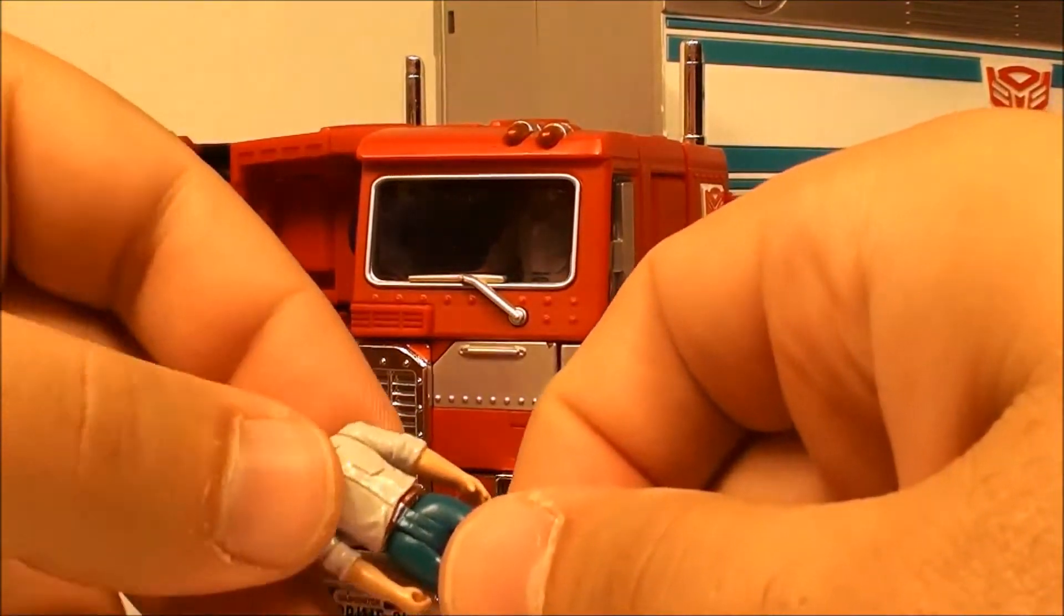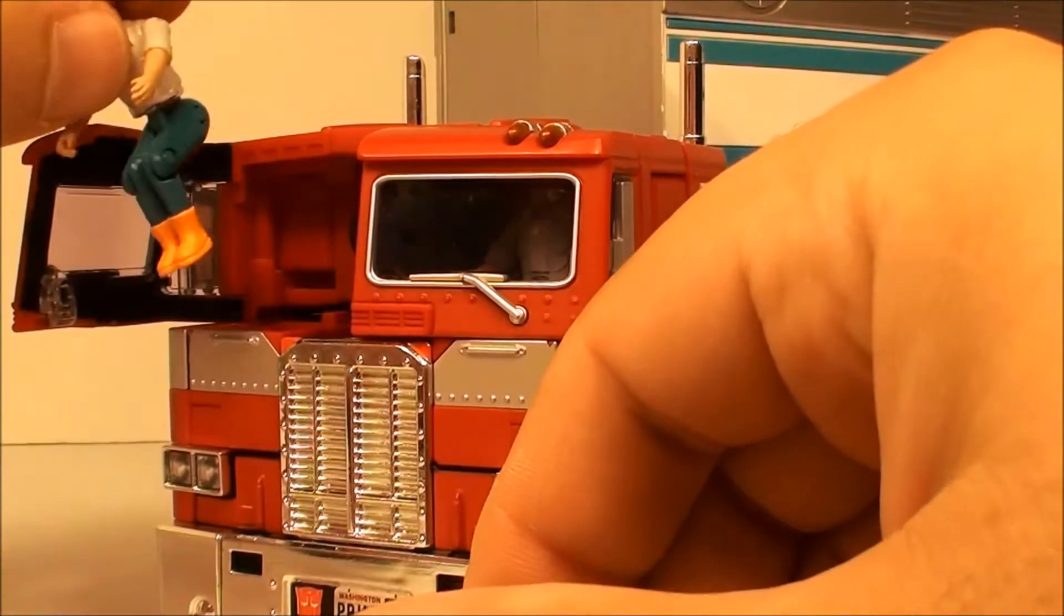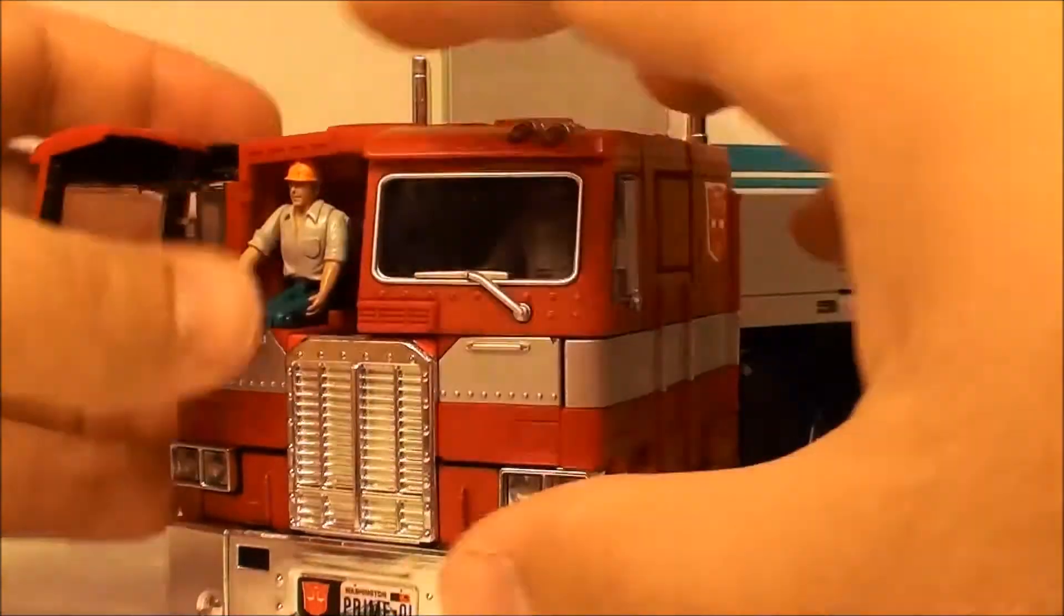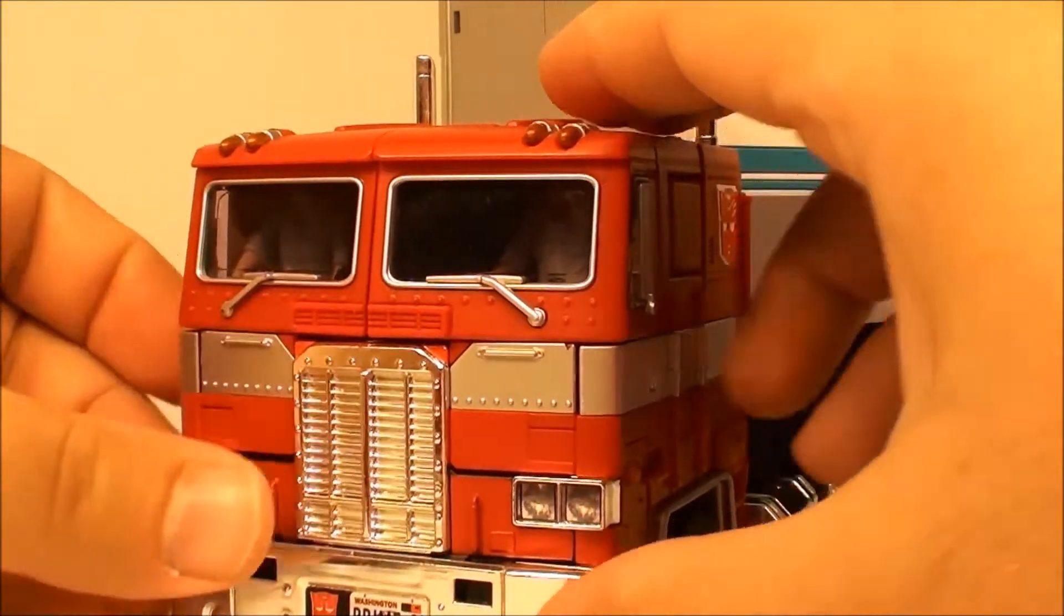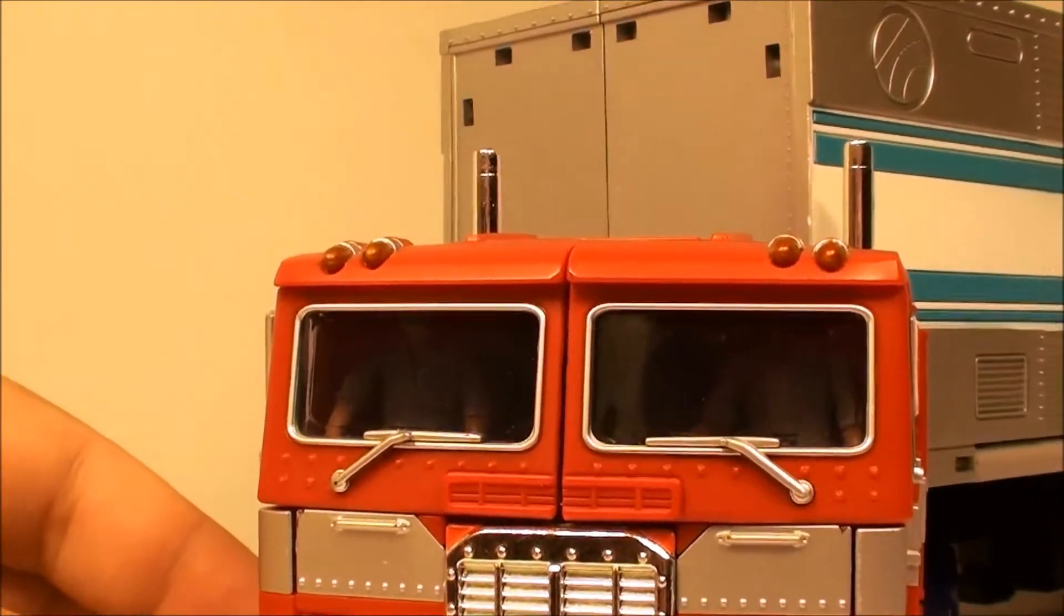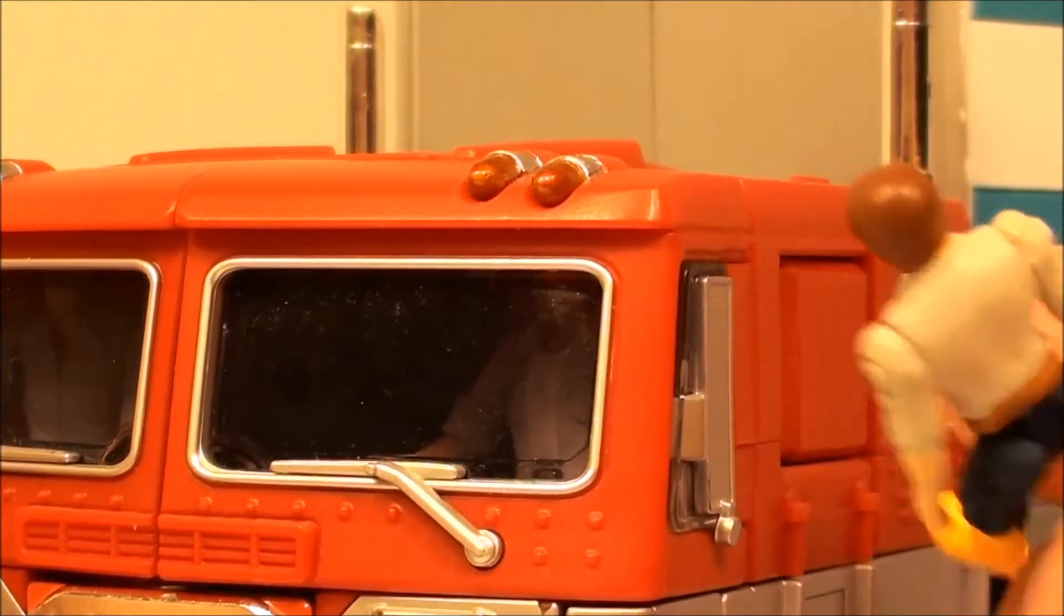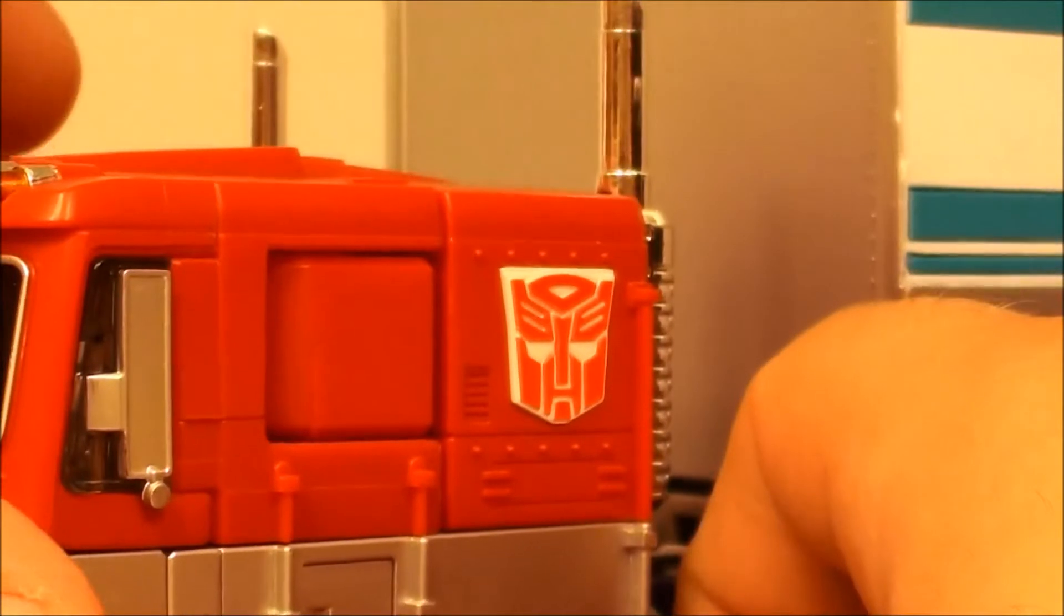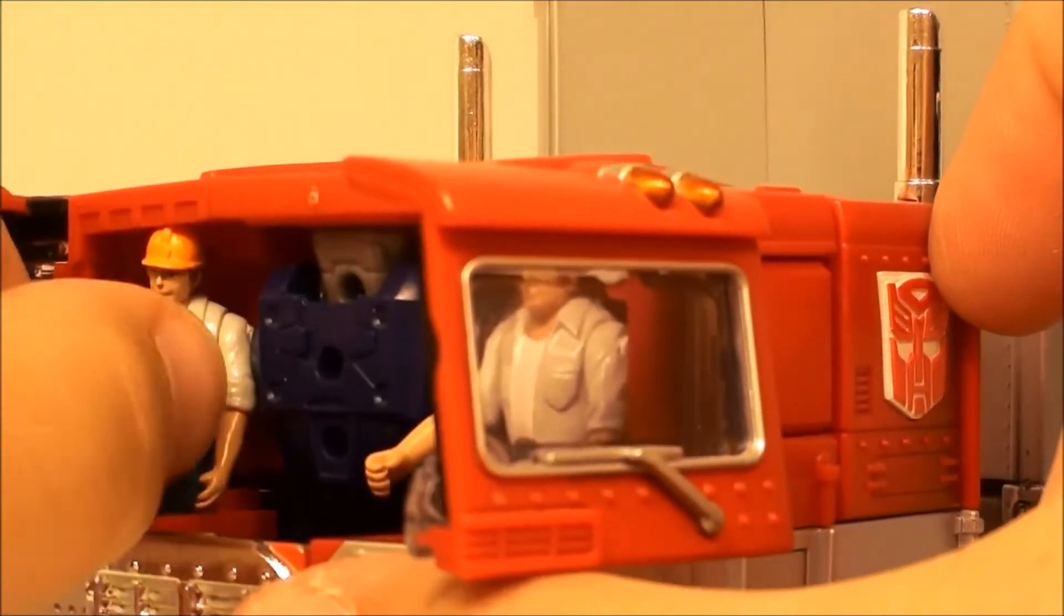And actually you can't really see them through the window there, so that could be a flaw. Let's see Spike. This is actually the first time I'm putting them in to MP10 here. So yeah, you can see their head barely clears the top, but they do get closed up in there and you can see them sort of. But I don't know, they're not as nicely in the window as the little Spike that comes with MP10. Of course they'll interact with all the other things like Roller and all the little seats and stuff within the trailer.